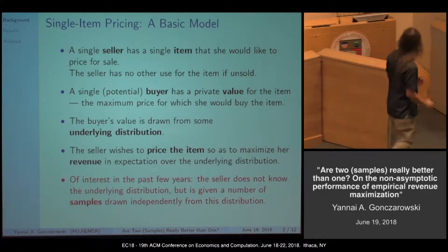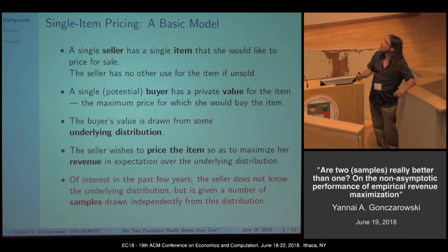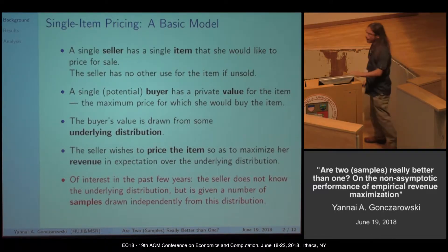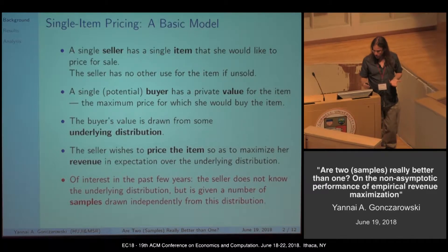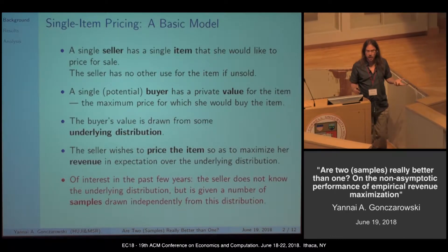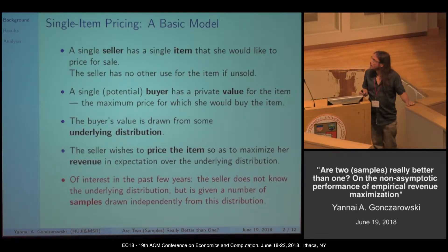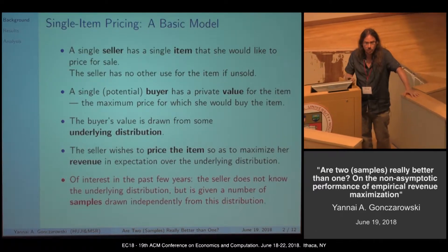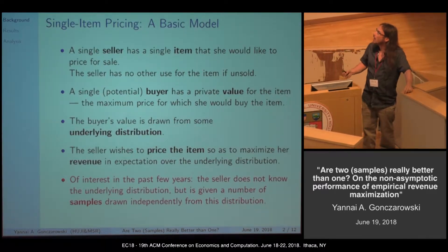So one slide on single item pricing. We have a very simple model: a single seller has a single item she would like to sell, has no use for the item if it's unsold, and she would like to sell it to a single buyer who has a private value for the item. The value is the maximum price the buyer is willing to pay, drawn from some underlying distribution. The seller wishes to price the item — no fancy mechanisms, just post a take-it-or-leave-it price — to maximize revenue. The seller does not know the underlying distribution, but is given a number of samples drawn independently from it, and would try to post a price to get good revenue guarantees in expectation over the underlying distribution.